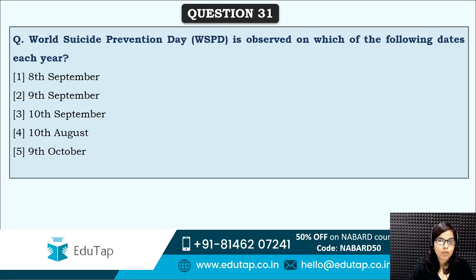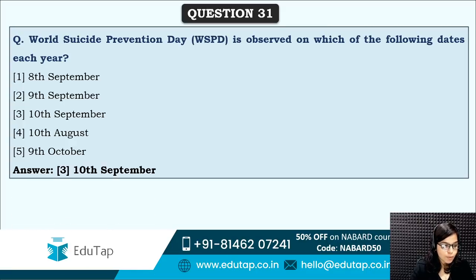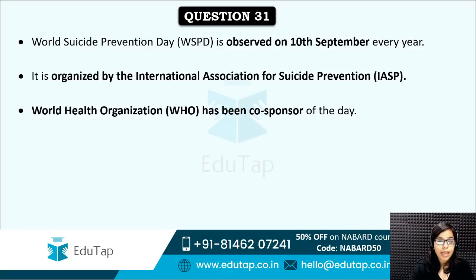Next: World Suicide Prevention Day is observed on which date each year? For these questions, you need to remember the date as well as the theme, since the theme changes every year. Suicide prevention is related to mental health, so it is part of your ESI syllabus. This day is observed on 10th September. It is organized by the International Association for Suicide Prevention, and the World Health Organization is the co-sponsor.